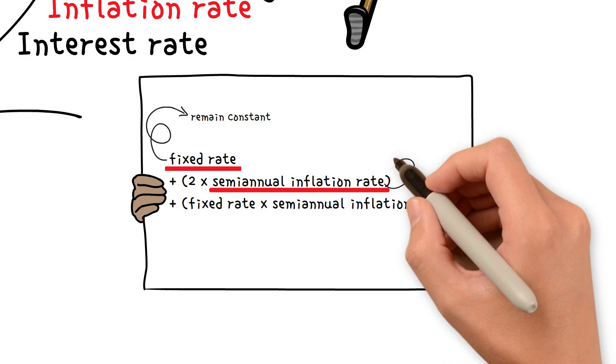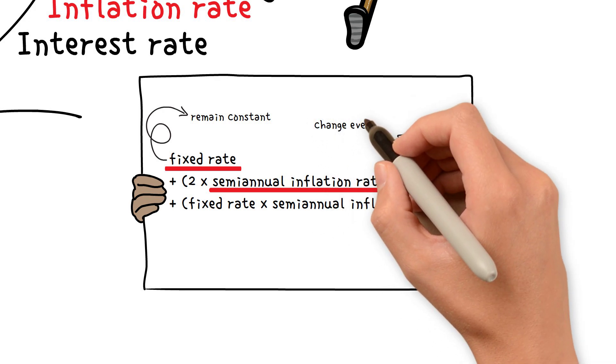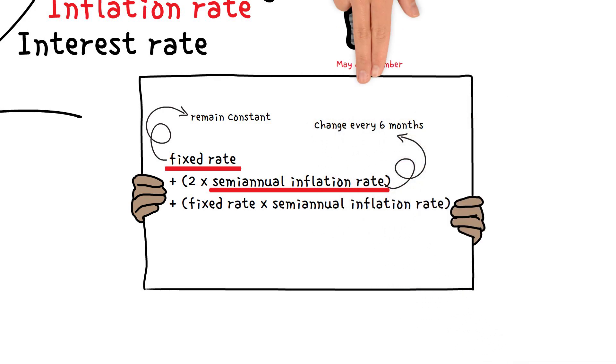I bond fixed interest rates and inflation rates are adjusted twice a year, in May and November. As a result, we must consider that the bond's interest rate changes every six months. You only need to consider changes in the inflation rate if you already own I bonds.